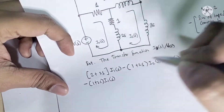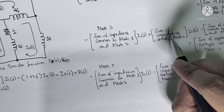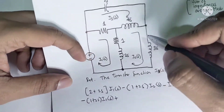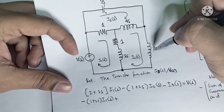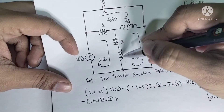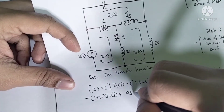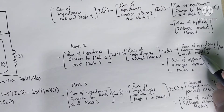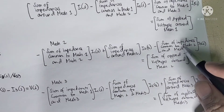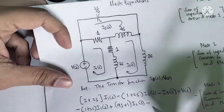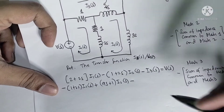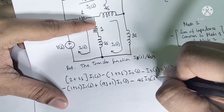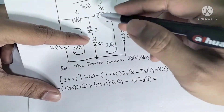For mesh two, the sum of impedances around mesh two includes the inductor 4s and 3s, giving 7s, plus additional terms totaling 9s, so the coefficient is (9s + 1) times I2(s). The third term is minus the impedances common to mesh two and mesh three, which is 4s, giving minus 4s times I3(s). The total applied voltage around mesh two is equal to zero.